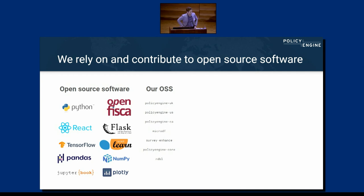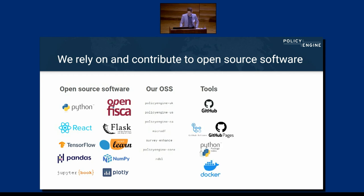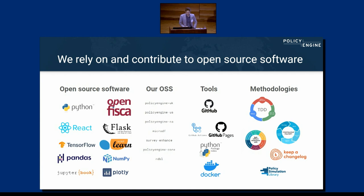Checking our progress — so far this year we've had about 700 merged pull requests from dozens of open source contributors around the world, and we only have a full-time staff of three technical people, so we're really proud of that community engagement. We use GitHub Actions, GitHub Pages, PIP, and methodologies like test-driven development. There's also an organization we're a member of called the Policy Simulation Library — a nonprofit dedicated to advancing open source in public policy analysis — and some of you may be interested in joining as well.